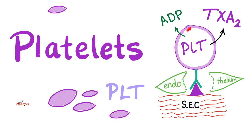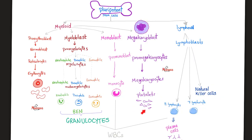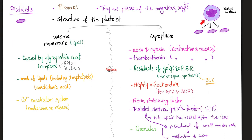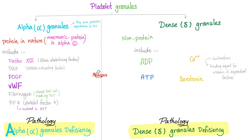Let's review platelets. For more detail, check out my bleeding and coagulation playlist. Platelets come from megakaryocytes, which come from myeloid stem cells, which come from pluripotent stem cells in the bone marrow. Platelets are not even cells — they are pieces of their grandmother, the megakaryocyte, which literally exploded giving out thousands of tiny platelets. They have no nucleus and no mitochondria. They just have a cell membrane and some cytoplasm from the megakaryocyte, containing alpha granules and dense or delta granules.